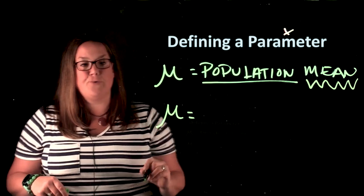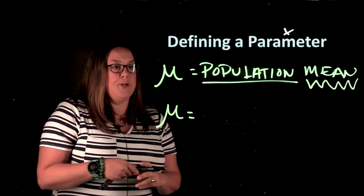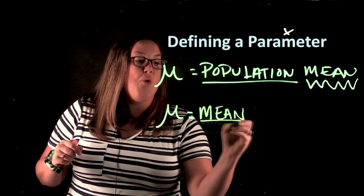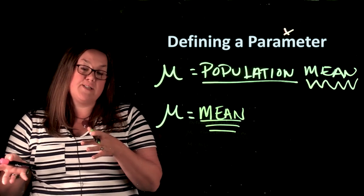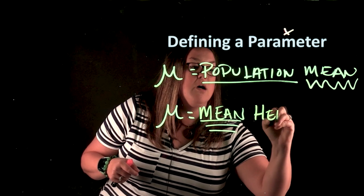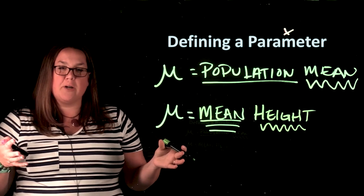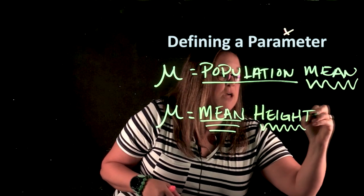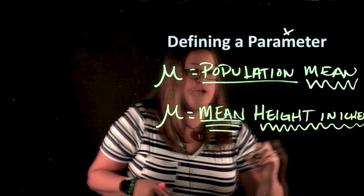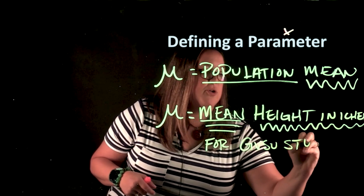So let's still use GVSU as our population, and let's say we're measuring the average height. So we would say mu equals — and because this is a population mean, you would always start with mu equals mean. Then what is the variable that you're measuring? Well, we talked about height. So it would be mu equals mean height. And it is valuable, especially when you're talking about quantitative data, to include the units. So maybe we would say mean height in inches. And then you would say for your population, which is for GVSU students.